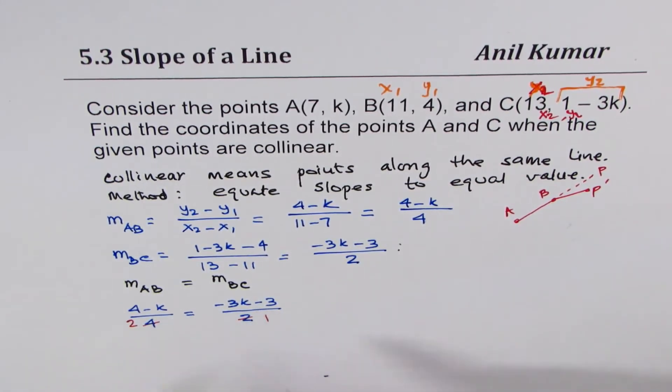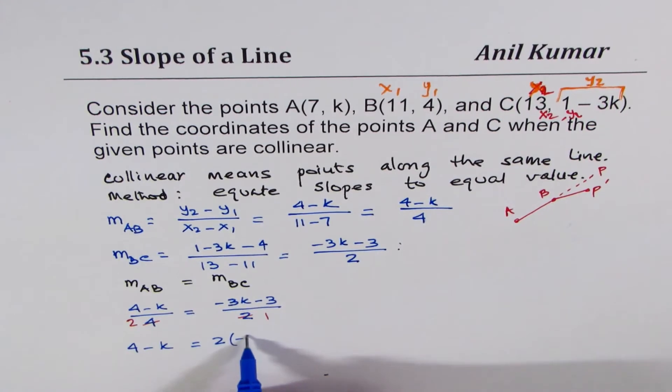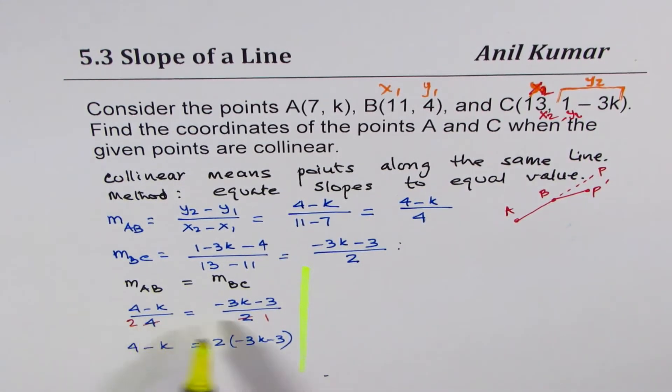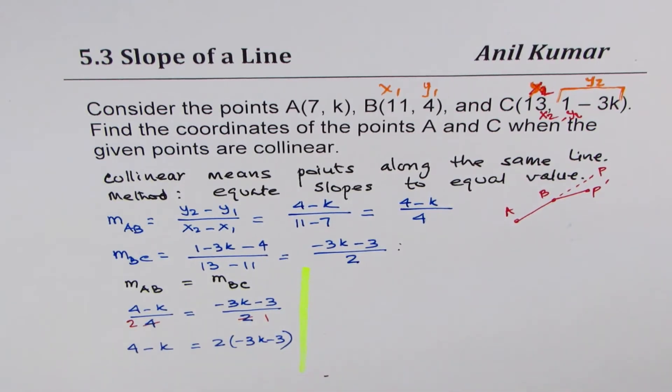And once you've done this, you cross multiply. So when you cross multiply, you get 4 minus K equals 2 times minus 3K minus 3. So I hope this step is clear. So go through this step once again. We could simplify, even if you don't do it, then we'll land up with bigger numbers. But you'll get the right answer.